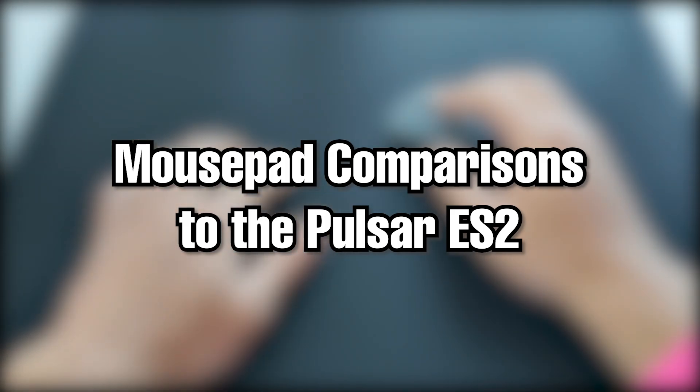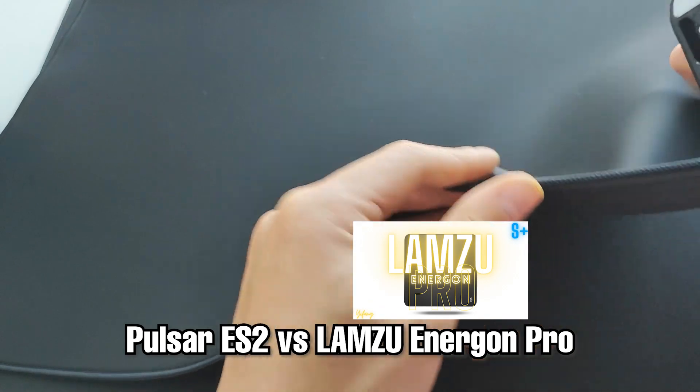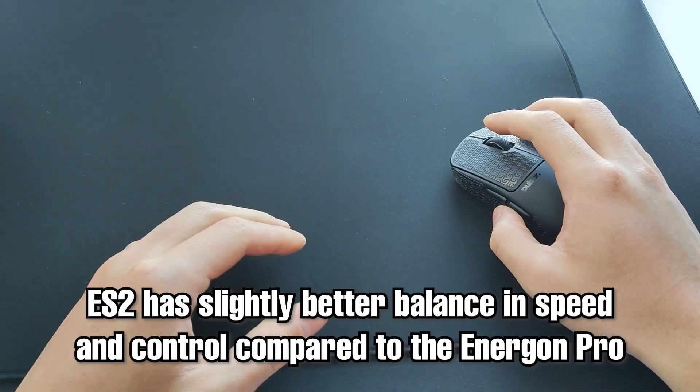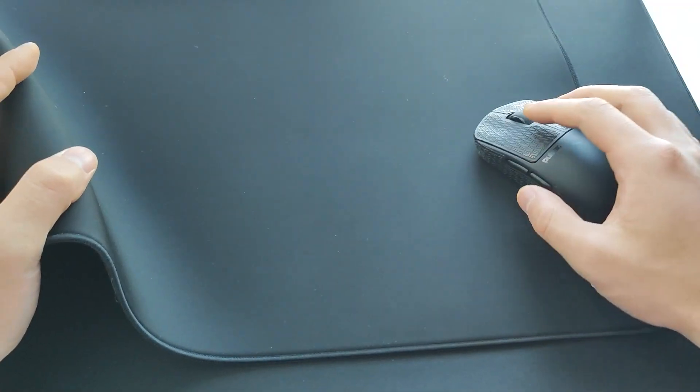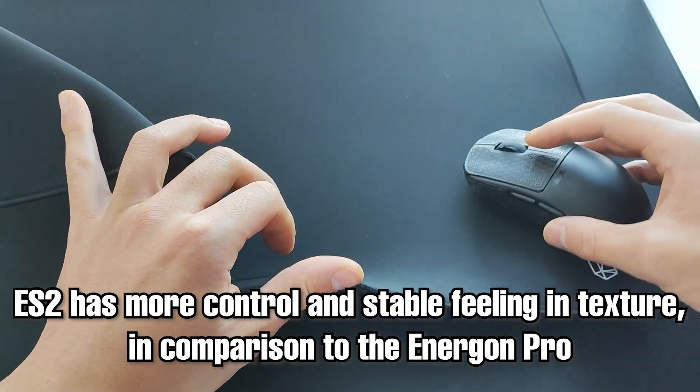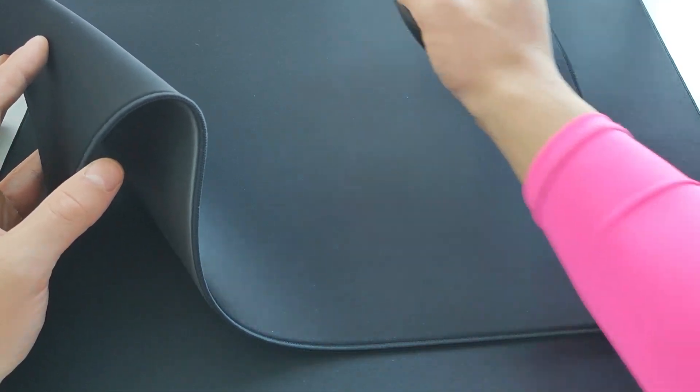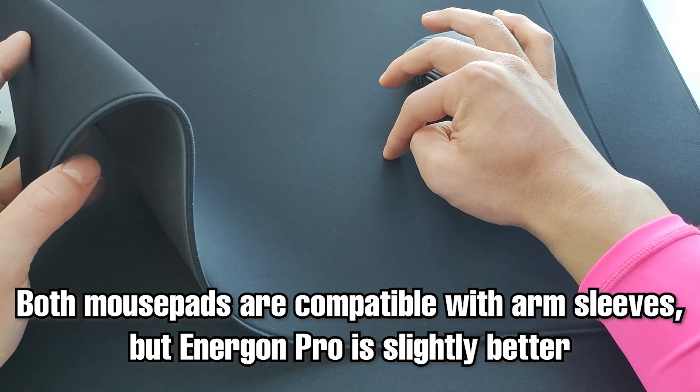Now finally, onto comparisons. This is where it gets interesting. So the first thing we'll talk about is comparing it to the Energon Pro here. The ES2 is a very slightly slower pad with better balance of speed and control. Now in terms of texture, there is a more stable and controlled feeling with the ES2 over the Energon Pro. The Energon Pro sometimes feels as if there is no mouse pad beneath you just because it's so smooth. Now both work perfectly with arm sleeves, but the Energon Pro is just a little bit better.